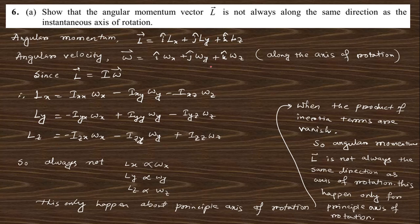Question 6a: Show that angular momentum L⃗ is not always along the instantaneous axis of rotation. Since L⃗ = Iω⃗ in tensor form, L⃗ = [I]ω⃗ where [I] is the inertia tensor. L⃗ is proportional to ω⃗ only when the off-diagonal (product of inertia) terms are zero. This occurs only along the principal axes of rotation, so in general L⃗ is not parallel to the rotation axis.